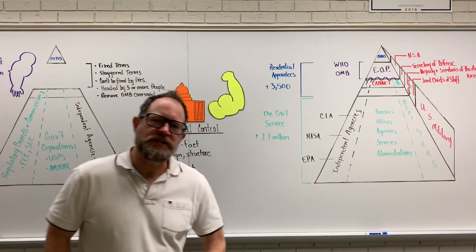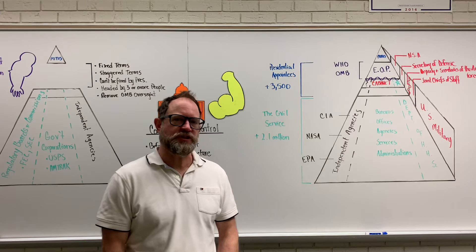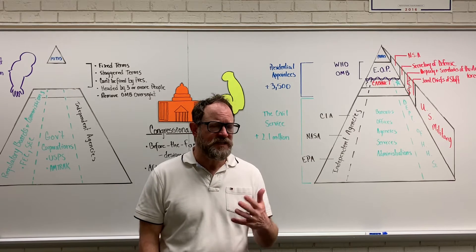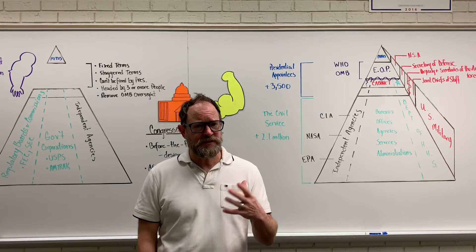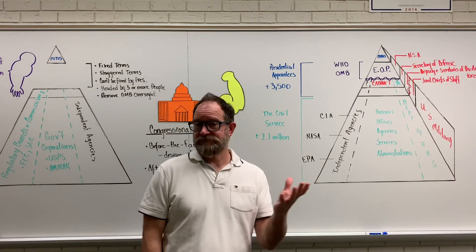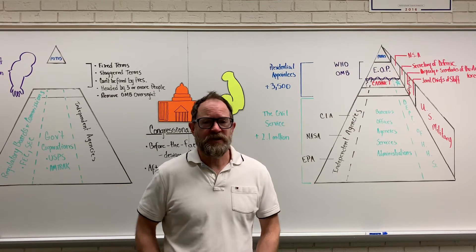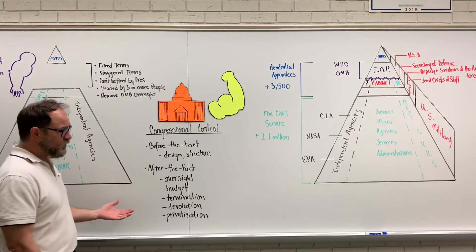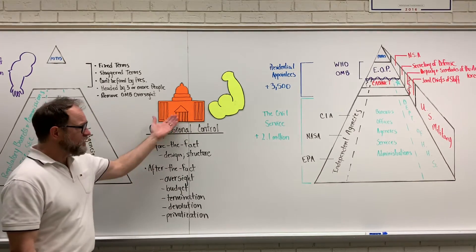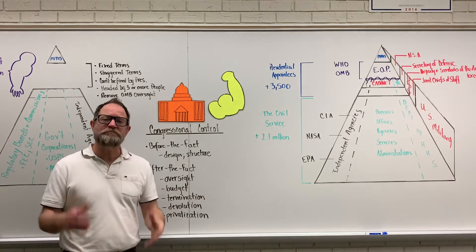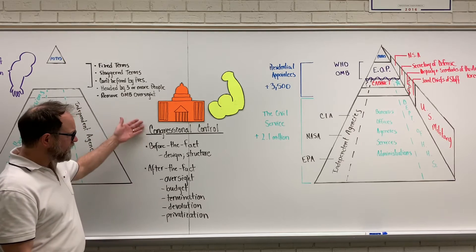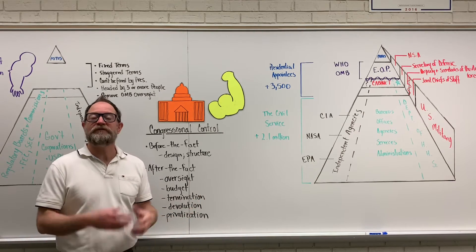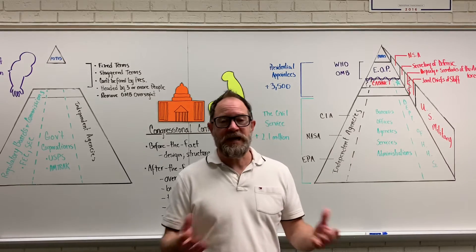Our topic continues to be the bureaucracy - essentially all the institutions that help the president execute laws passed by Congress. Congress does not cede complete control of the bureaucracy to the president; they attempt to retain control, especially when Congress is controlled by a different political party than the president. Congress maintains control through before-the-fact reasons and after-the-fact techniques.